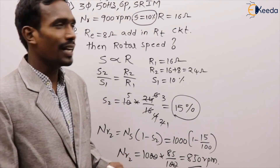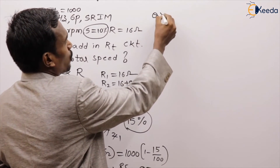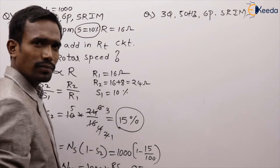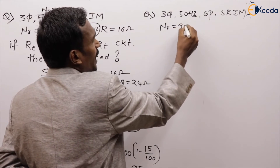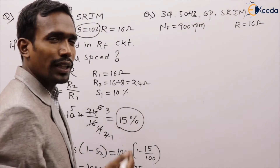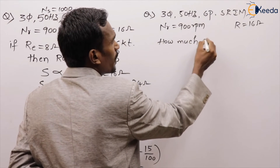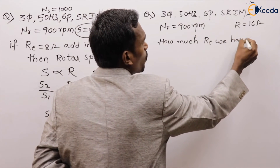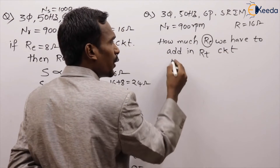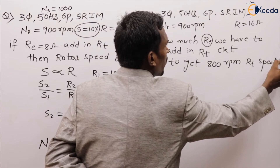Next question — write it down and solve it yourself. Same machine: a three-phase 50 Hz, six-pole slip ring induction machine rotating at 900 rpm with rotor resistance of 16 ohms. How much extra resistance must be added in the rotor circuit to get a rotor speed of 800 rpm?